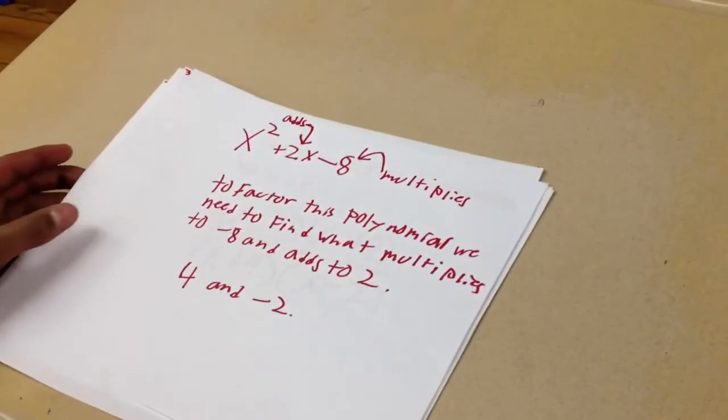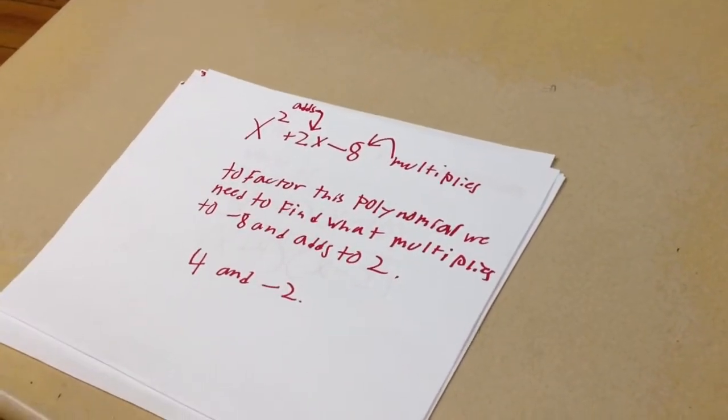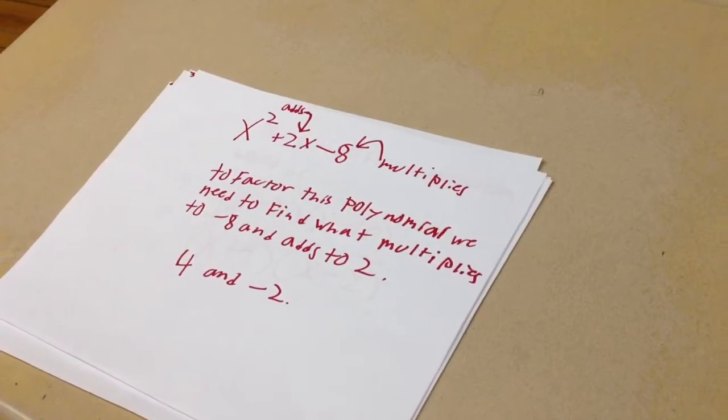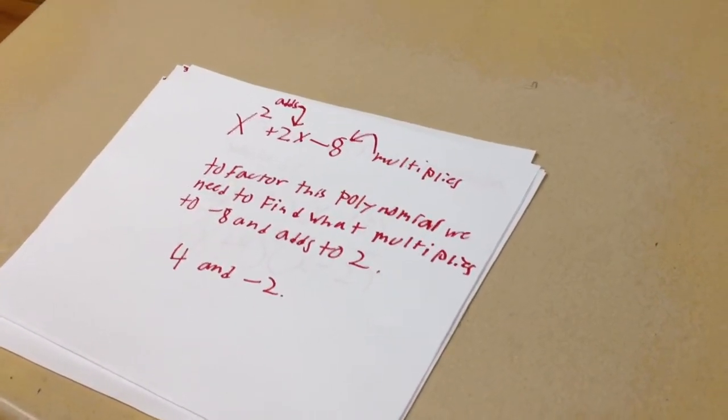And with the denominator, the bottom, we have to do the same. We have to find what adds to positive 2 and multiplies to negative 8. And that would be 4 and negative 2.